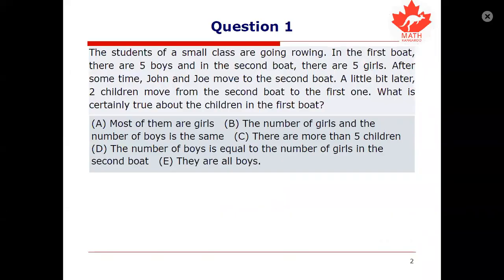Straight off the bat with a question. The students of a small class are going rowing. In the first boat there are five boys and in the second boat there are five girls. After some time John and Joe, two boys, move to the second boat. A little bit later two children move from the second boat to the first one. Which of the following is certainly true about the children in the first boat?